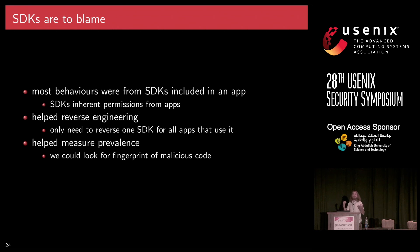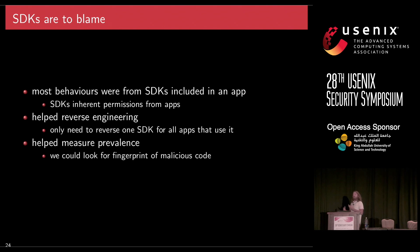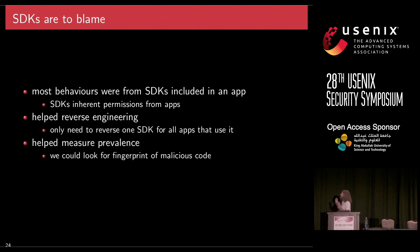In one app, an SDK may have location permission and behave differently as a result. This also helped with our reverse engineering, because we only needed to reverse one example of an app sending particular information to a particular destination on the internet. That destination corresponded to an SDK we could reverse engineer — find out how they were doing it, fingerprint the malicious code, search for it in other SDKs, and measure its prevalence at large.